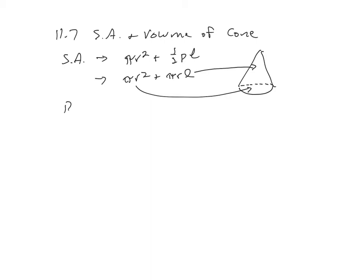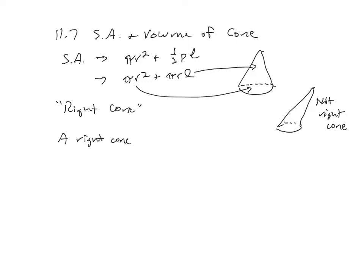The book uses the term 'right cone.' A right cone looks like the standard picture: technically you could have a cone that's slanted, but a right cone has its height going straight down through the middle, making a right angle at the base. So if a problem says 'a right cone has a radius of 3 and a height of 4, find the surface area,' those are the ones where you need to find the slant height first.